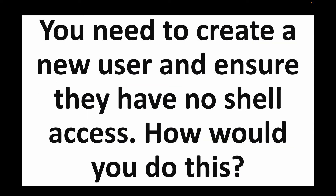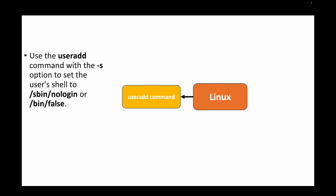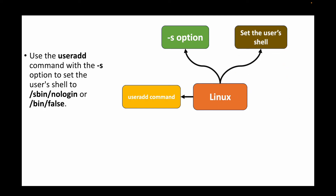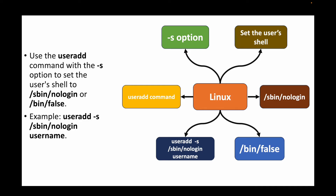The next question: you need to create a new user and ensure they have no shell access — how would you do this? Use the useradd command. To deny shell access, use the -s option to set the user's shell to /sbin/nologin or /bin/false. For example: useradd -s /sbin/nologin <username>. This creates the user but does not grant any shell access.